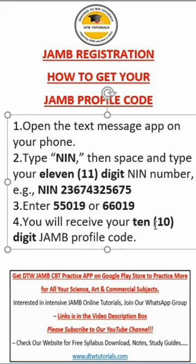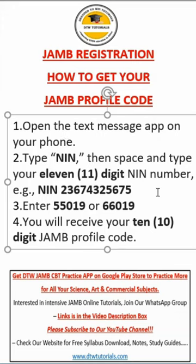You will then receive a 10-digit JAMB Profile Code, and this is what you take to go purchase your E-PIN, which is your E-Form from the bank. When you get that, you take your Profile Code and your E-PIN from the bank, and you go to your JAMB CBT Center to do your registration. So this is how you generate your JAMB Profile Code.